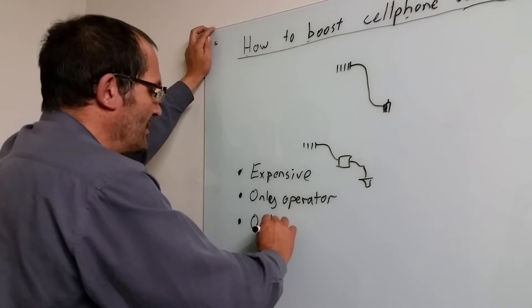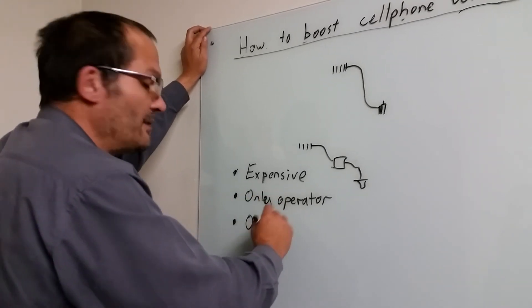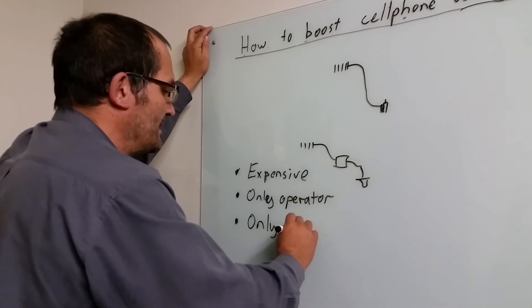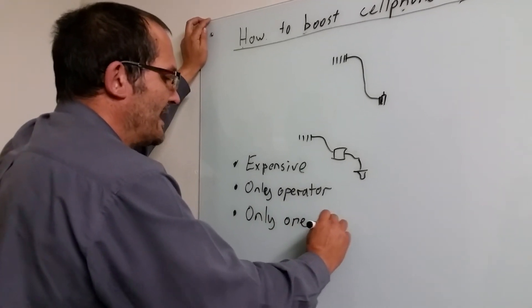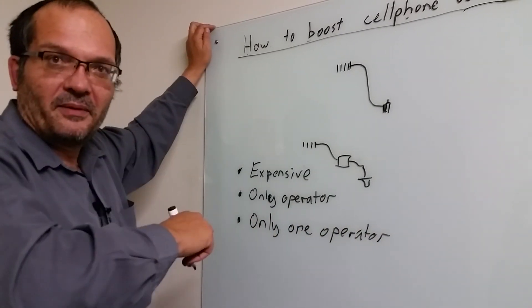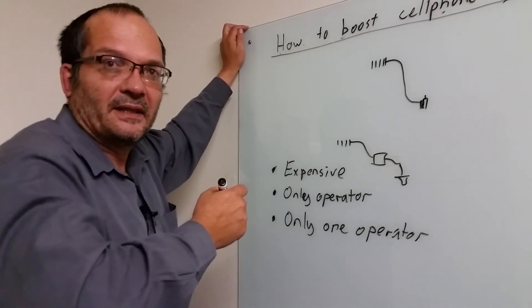So for example, only one operator. So Vodacom is forced to filter the signal so it won't pass MTN, Cell C or whatever else. So only one operator. Voice can be done, and if there's more than one frequency band, you need virtually two repeaters.